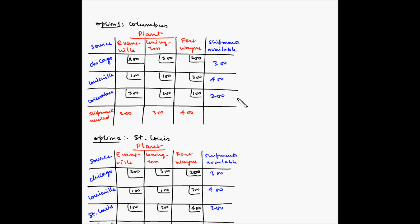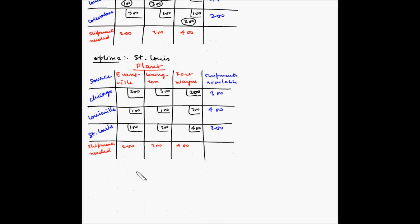Each of these options is solved individually using the transportation method. The final allocations for option 1 are: 100 units from Chicago to Evansville, 200 units from Chicago to Fort Wayne, 100 from Louisville to Evansville, 300 from Louisville to Lexington, and 200 from Columbus to Fort Wayne. For option 2: 300 from Chicago to Fort Wayne, 300 from Louisville to Lexington, 100 from Louisville to Fort Wayne, and 200 from St. Louis to Evansville.